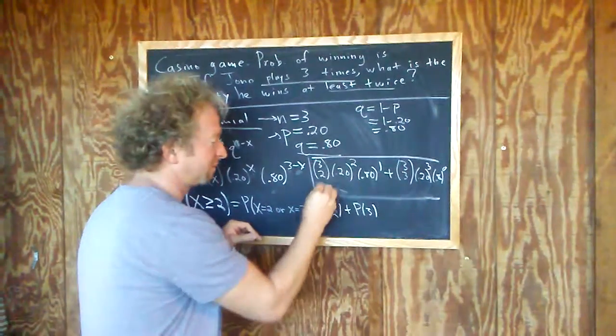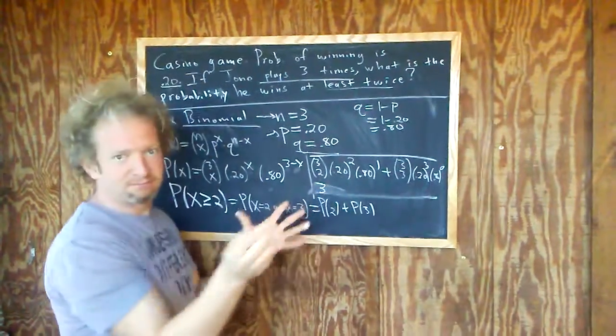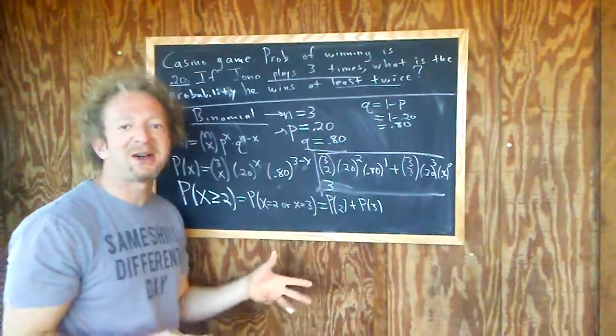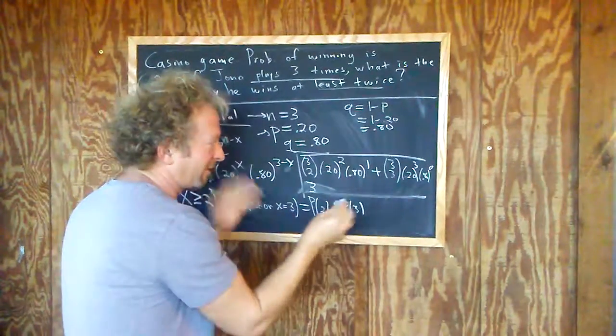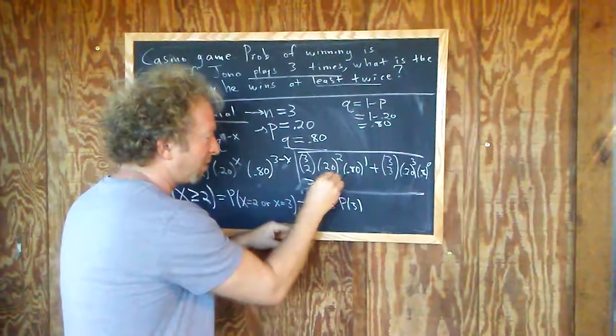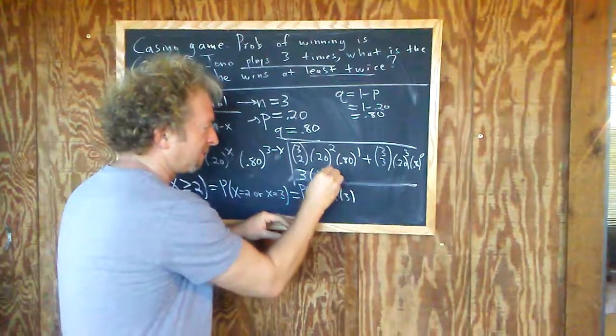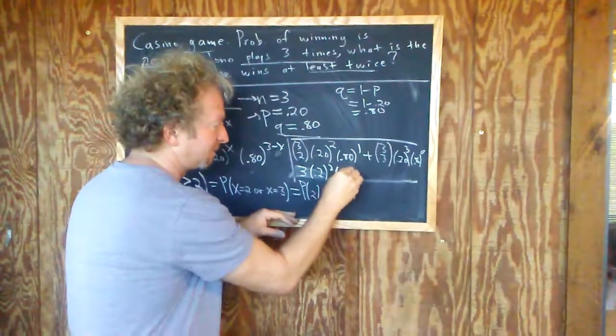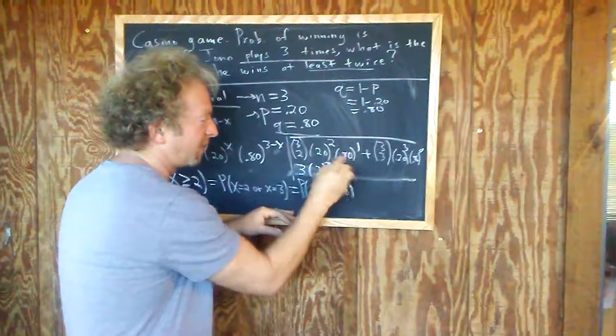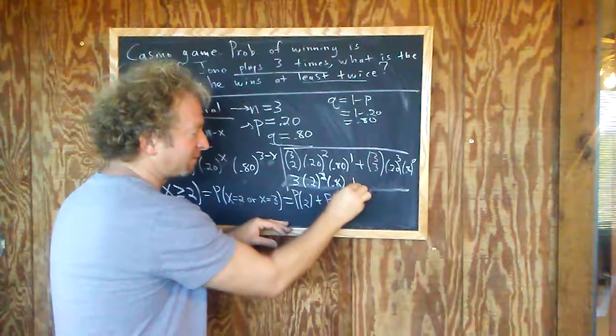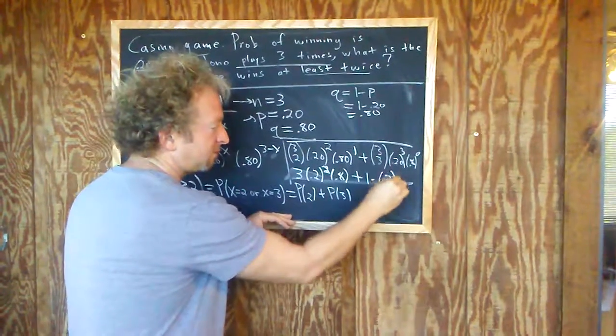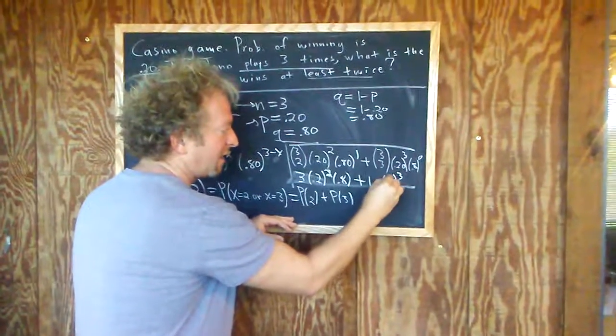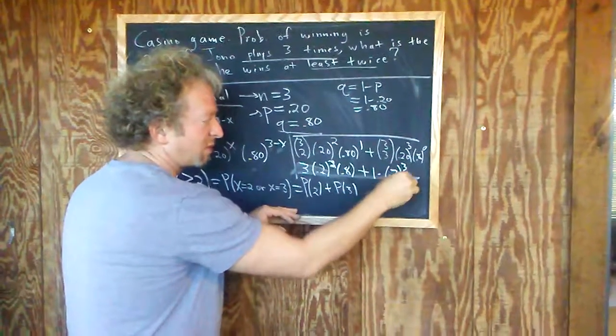So three choose two is three. I just know that. It's math. You could put it on your calculator or work out the actual formula. I'll leave the calculator work. This is 0.2 squared. So I'll leave it like that. 0.8. Right. The 0.8 to the one is just 0.8. Three choose three is one. This is 0.2 cubed. And then 0.8 to the zero is one. So times one.